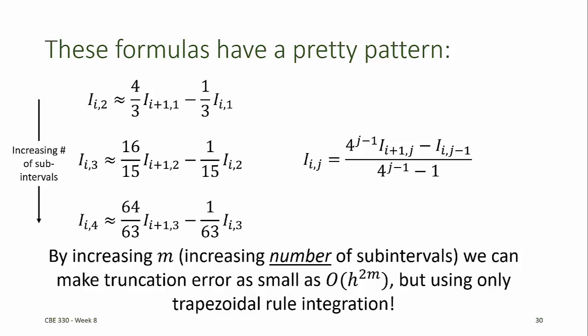The power of Romberg integration is that by increasing m, which is equivalent to increasing the number of subintervals, we can make the truncation error as small as we need to, but only using trapezoidal rule integration. This is particularly useful for analytical functions that are very difficult to integrate analytically, because we can calculate the value of the function at as many points as we need to. If we have real x, y data, we may be limited by where the data are collected.